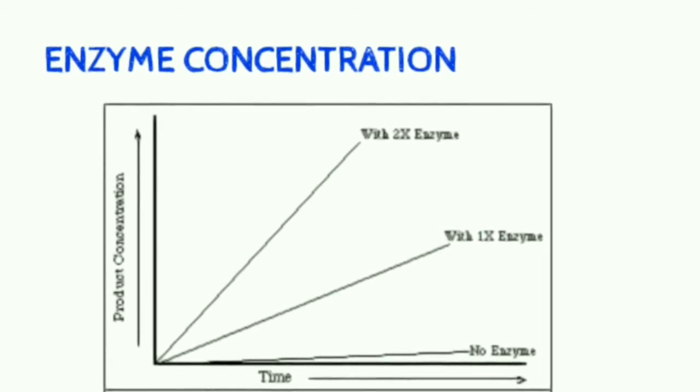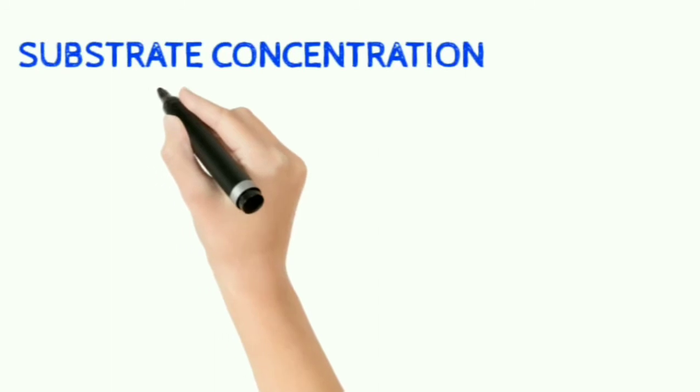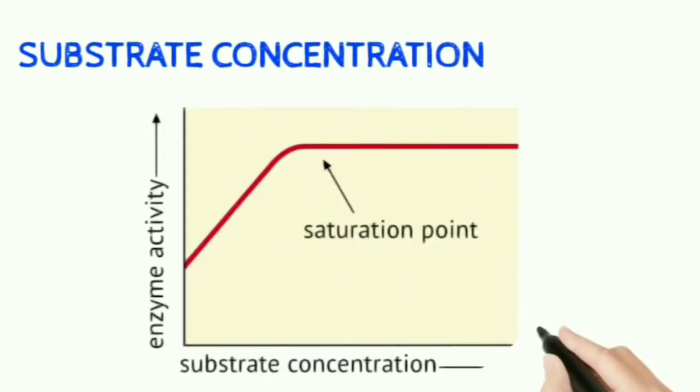Next factor that we have is substrate concentration. In the graph you can appreciate that the velocity increases initially but then flattens. Here we have a constant known as Michaelis constant, which is defined as the substrate concentration at half of the maximum velocity. It is independent of enzyme concentration. When the enzyme is doubled, Vmax will be doubled, but half of Vmax remains the same.